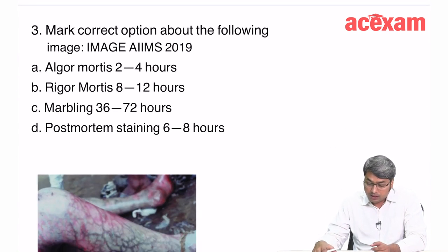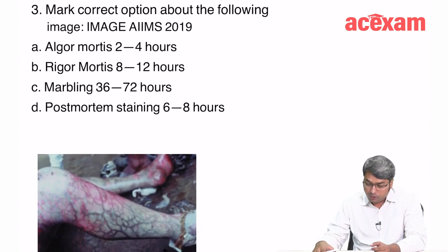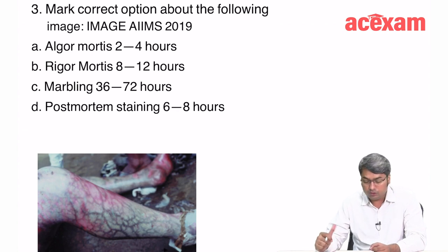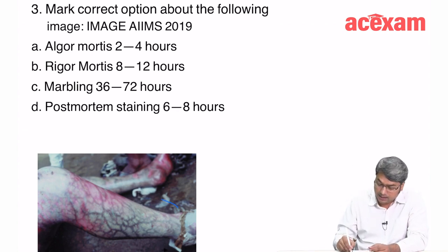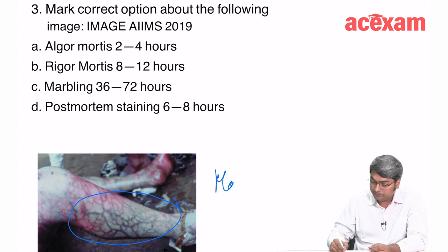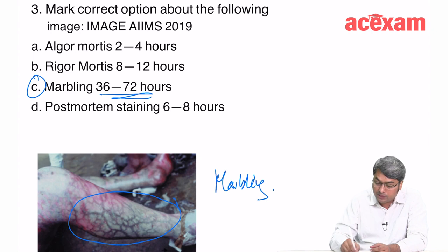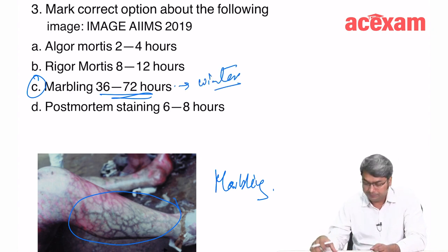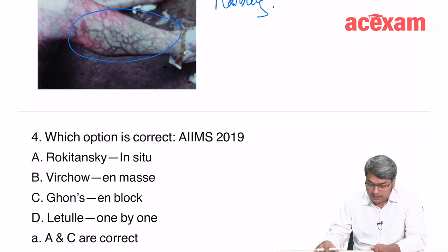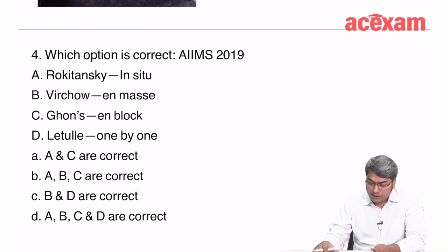Another AIIMS 2019 question asks about the same marbling image with multiple correct options. Marbling appears by 36–72 hours in winter and earlier in summer. These are the main features to identify in any marbling image.